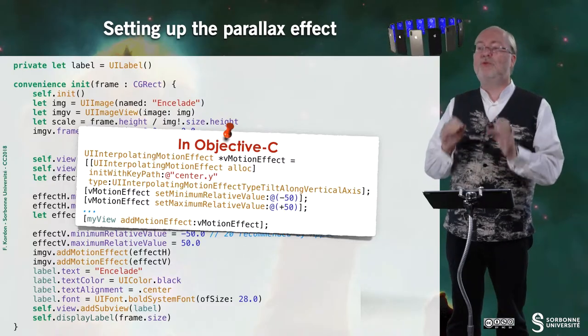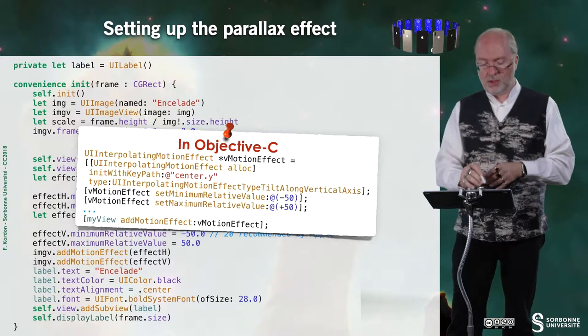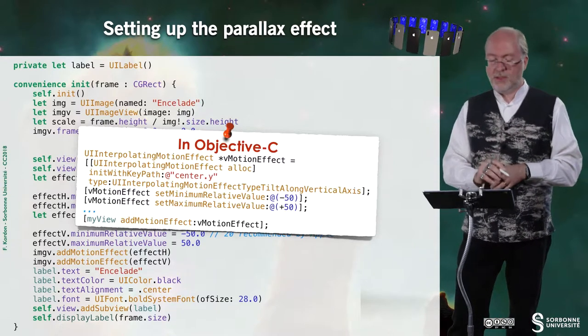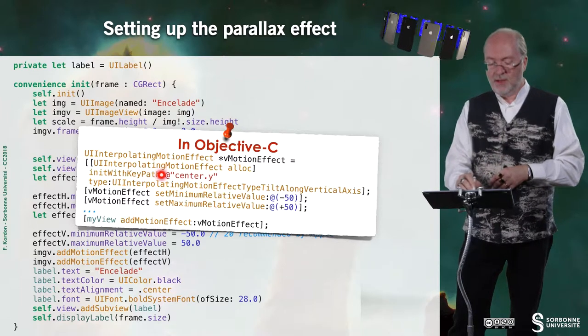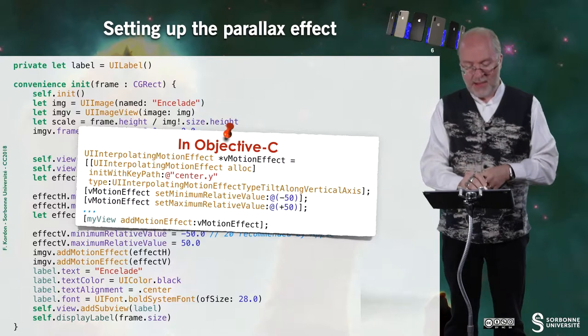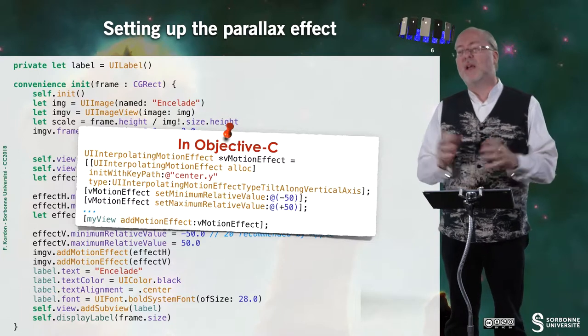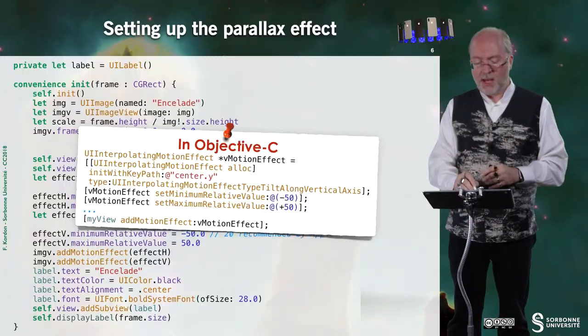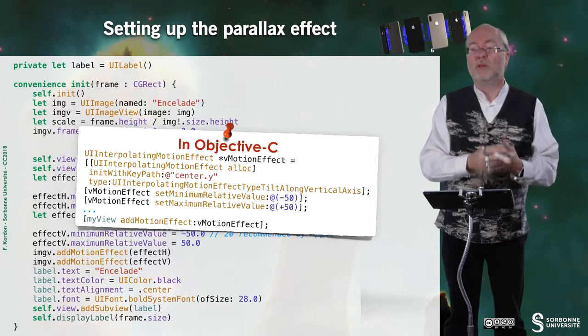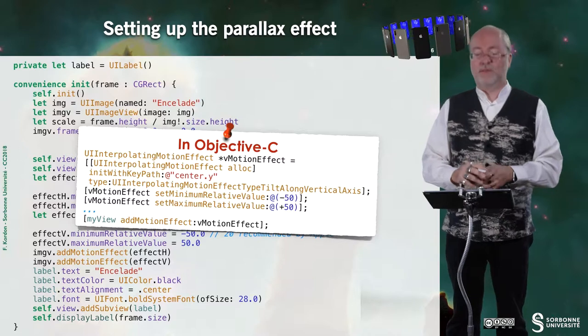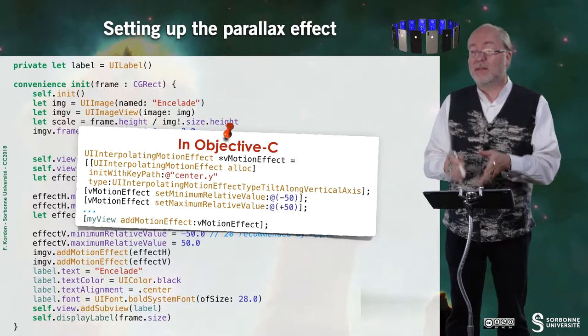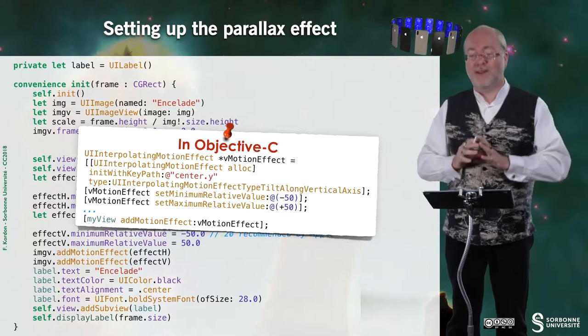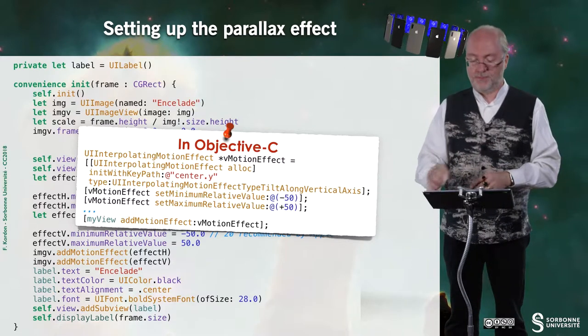In Objective-C, it's very similar. I just provide you with the portion of code that is relevant. I create the vertical motion effect. Here, I init with this key path. So, I create the interpolating motion effect. In Objective-C, identifiers of functions are quite long, which is sometimes boring. And here, once again, I set the minimum effect value, the maximum effect value. And I add the motion effect to the current view. So, you see, it's really the same code.